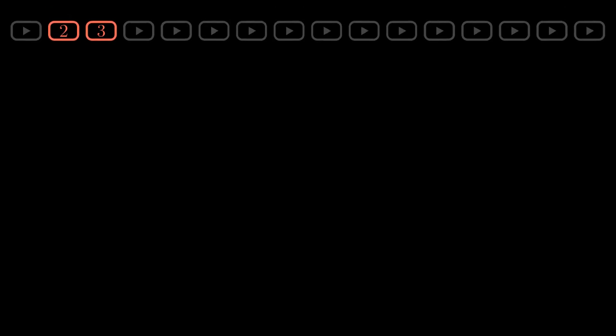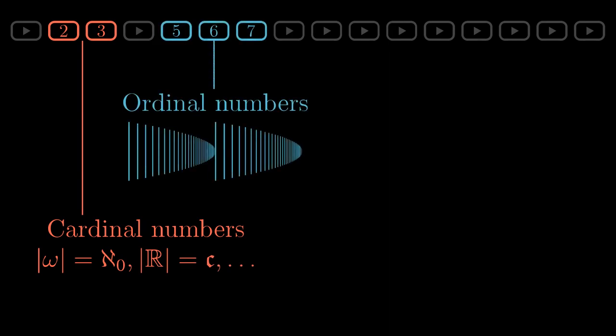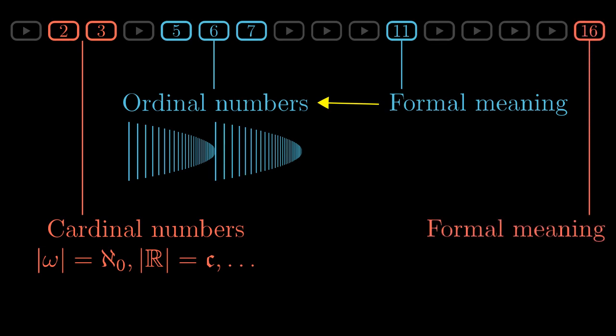At the beginning of the essence of set theory, we introduced cardinal numbers. Aleph 0 is the size of the set of natural numbers, the continuum is the size of the set of real numbers and so on. Later we studied ordinal numbers, the types of well-ordered sets. It wasn't until chapter 11 when we defined what an ordinal number formally means. And now we finally reveal the formal meaning of cardinals.